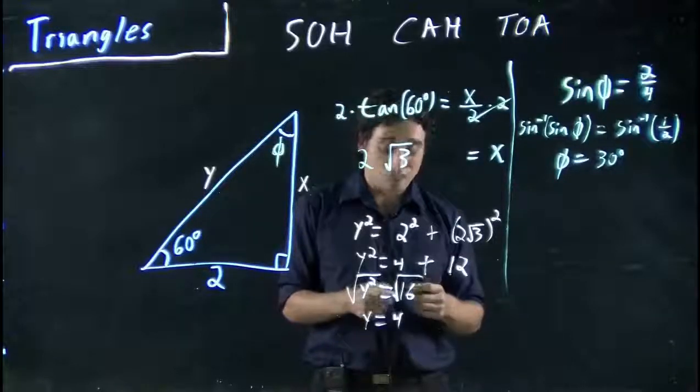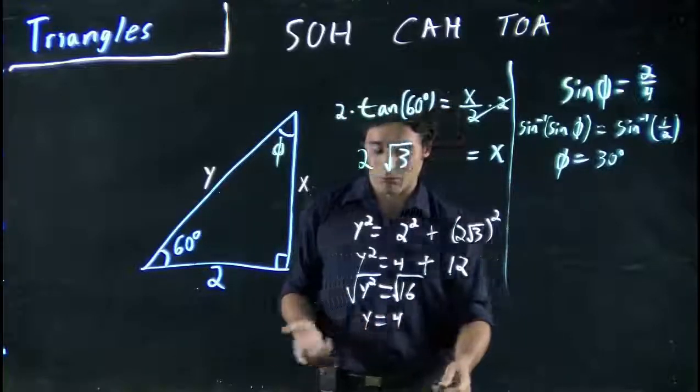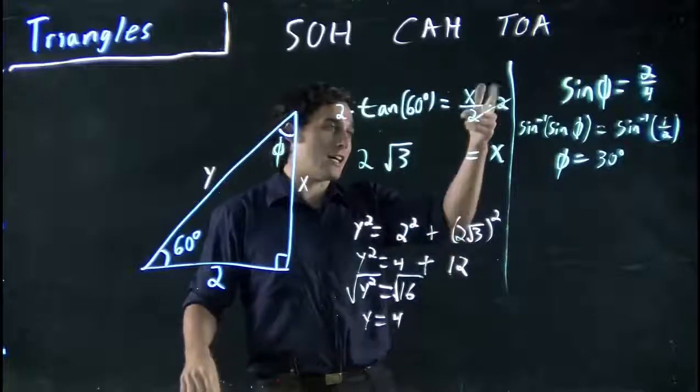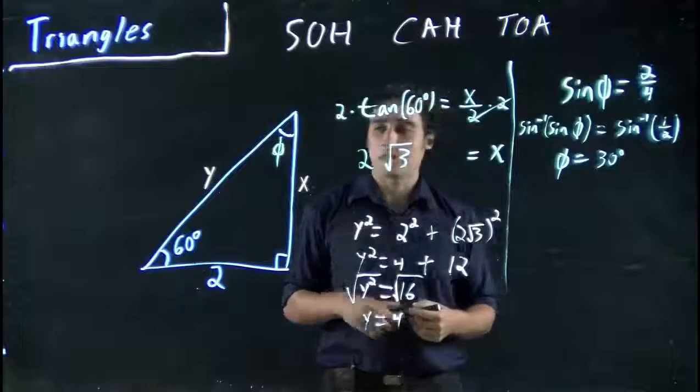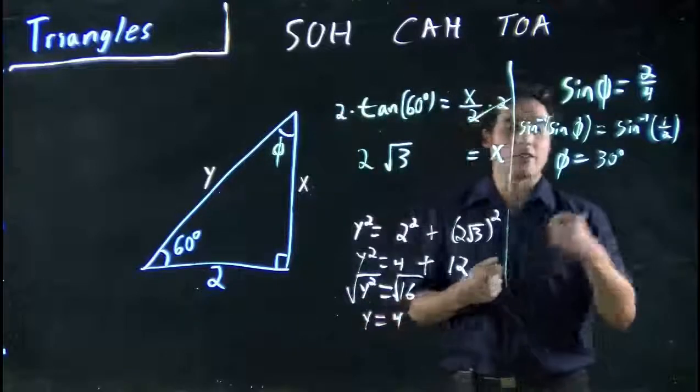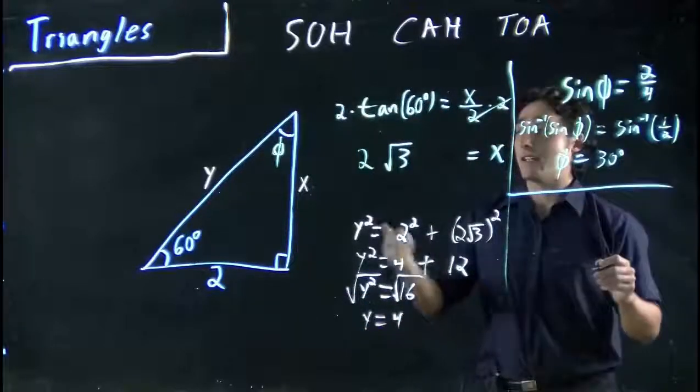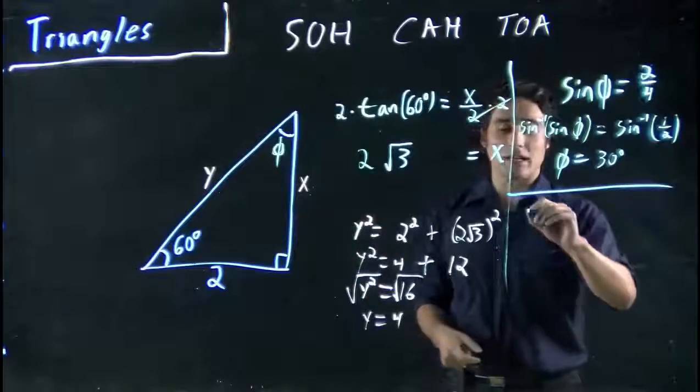But, I could have actually saved myself some work. I didn't need to use sine. I could have used cos, as I said. I could have used tan. But there's one other thing that we haven't looked at. And that's the idea that the angles within a triangle adds up to 180. All of these angles add up to 180.